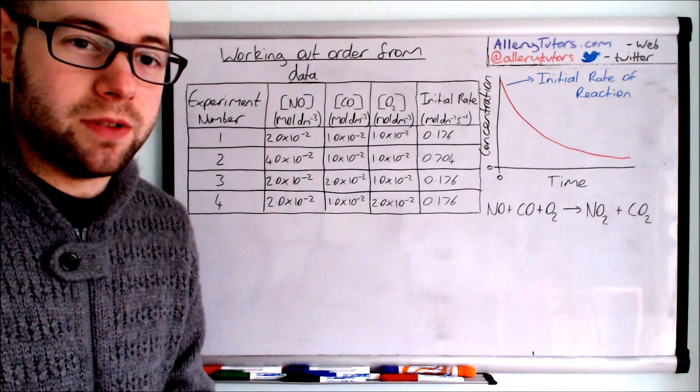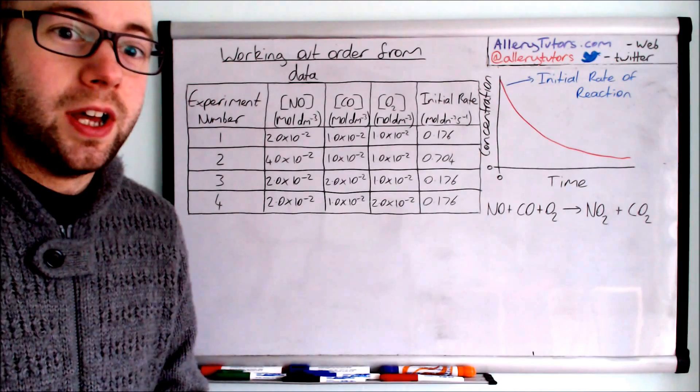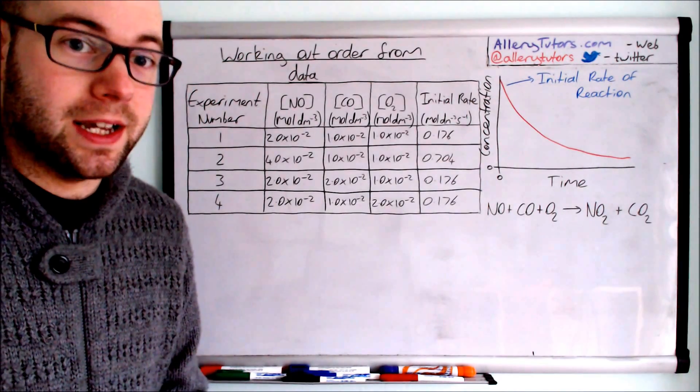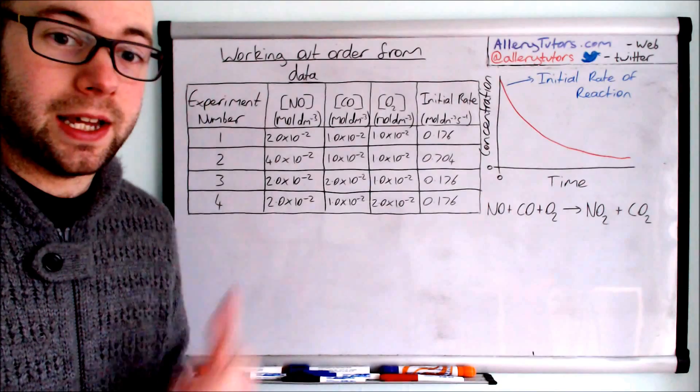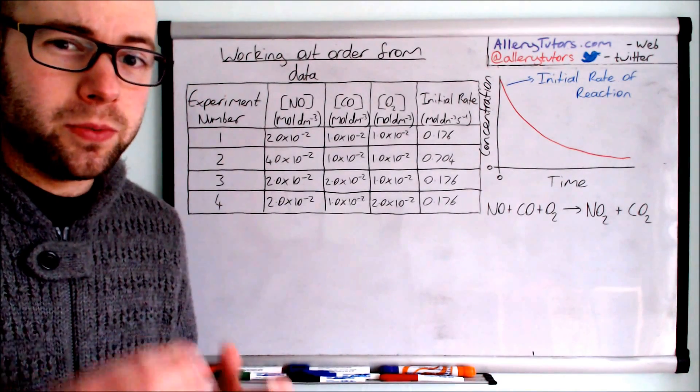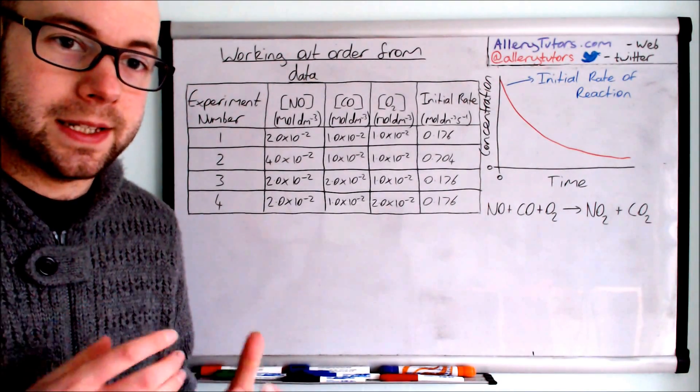We can only come up with the rate equation or the rate expression by experimental data, and so it's very common in the exam for them to give you some data like this here and work the equation out. The word initial rate comes up this time.